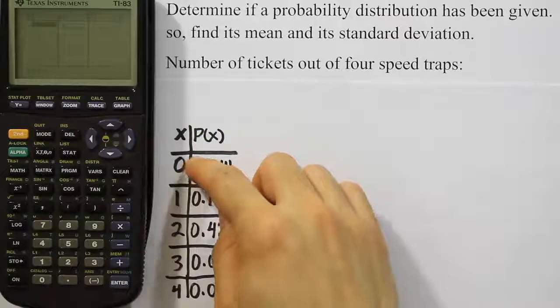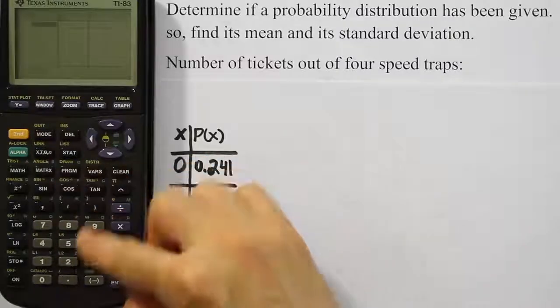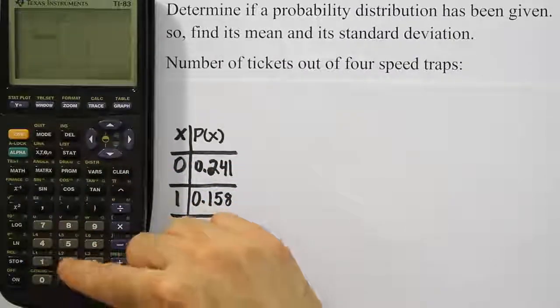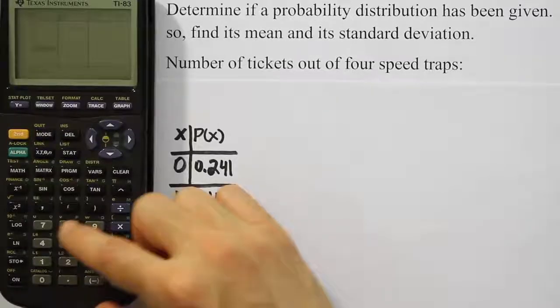We're going to go ahead and type in the numbers. First I'm going to do 0 through 4 in the first column. So 0, enter 1, enter 2, enter 3, enter 4, enter.